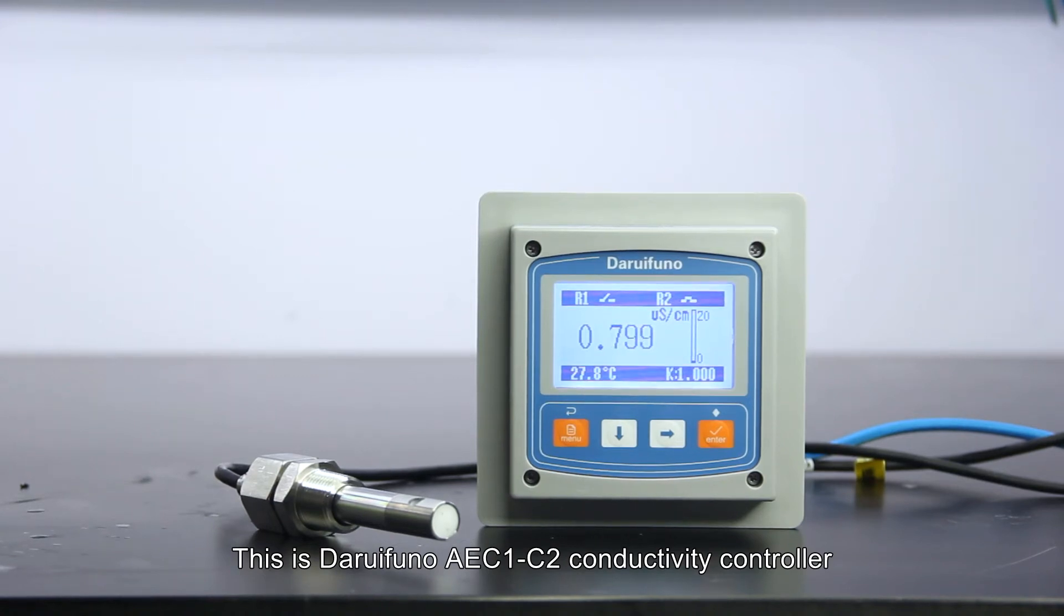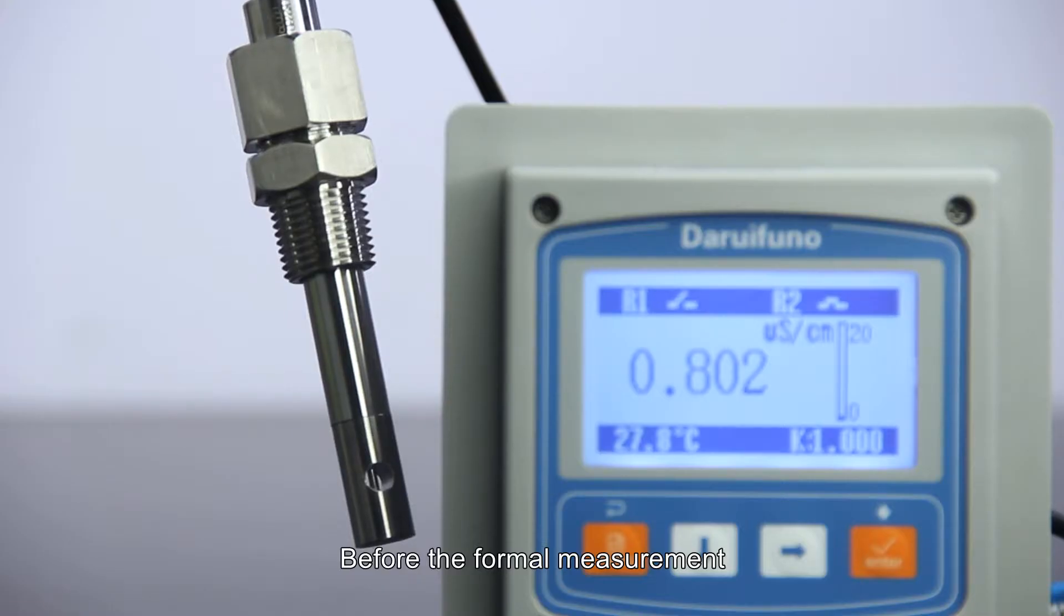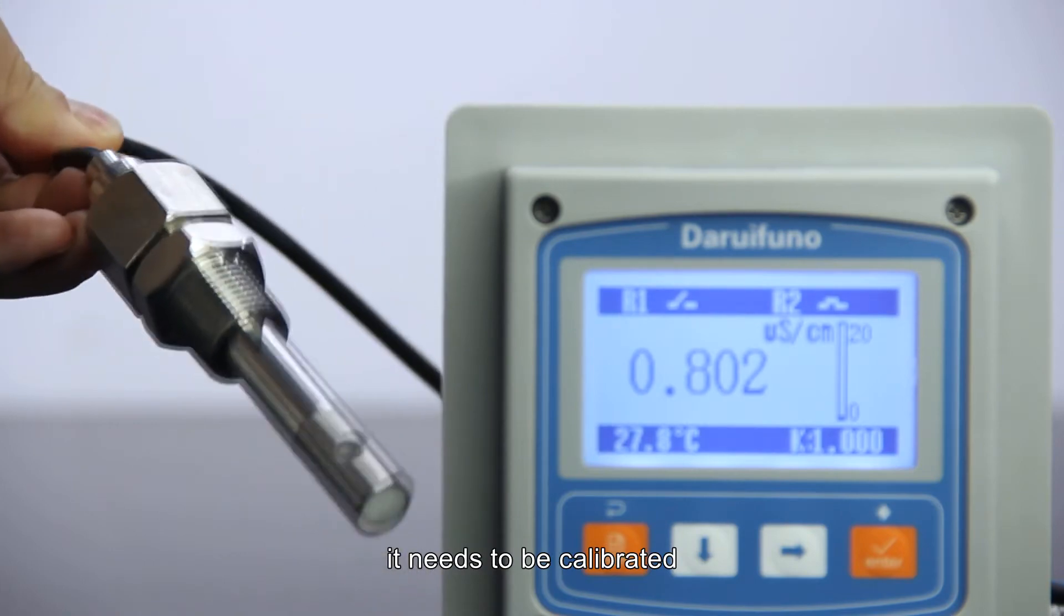This is Daruikino AEC1C2 Conductivity Controller. Before the formal measurement, it needs to be calibrated.